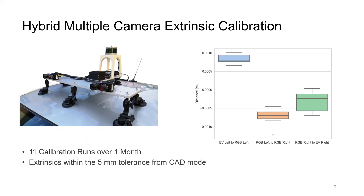The advantage of converting events to frames for calibration is that this enables hybrid multiple camera calibration using standard toolboxes. We demonstrate this by calibrating the extrinsic and intrinsic parameters of an event camera in combination with a standard frame-based camera. Our setup consists of hardware-synchronized two global shutter RGB cameras and two event cameras. To assess the repeatability of our approach, we calibrate a hybrid setup 11 times over the course of one month. The box plot shows the deviation of the estimated translation by our proposed framework from the CAD model. The errors are well within the limit of the CAD model accuracy of 5 mm, which shows that the extrinsic calibration is accurate within the tolerance of the CAD model.